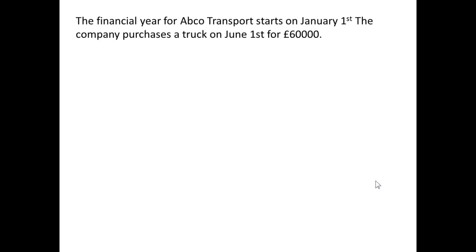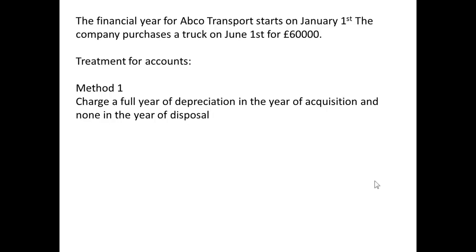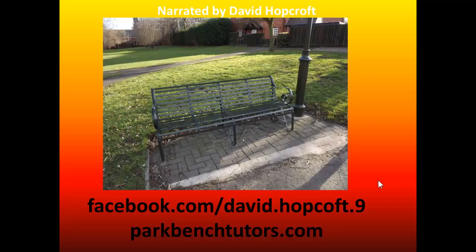One final thing when we deal with depreciation is what happens when we start the financial year partway through. In this case, the financial year starts on January the 1st, but the fixed asset is bought on June the 1st — in other words, part way through the year — for £60,000. There are two methods that can be used. The first method is to charge a full year of depreciation in the year the asset was acquired, and then charge nothing in the year of disposal. In the second method, we calculate the amount of depreciation by months. If it was bought on June the 1st, from June to the end of December are seven complete months, so we would then calculate seven-twelfths of a year's depreciation.